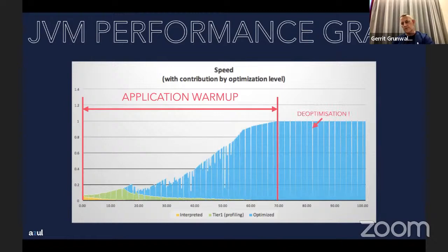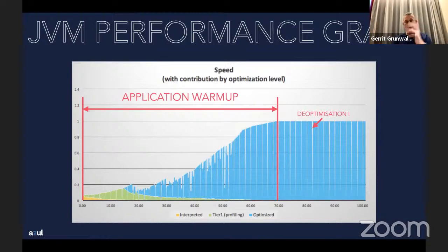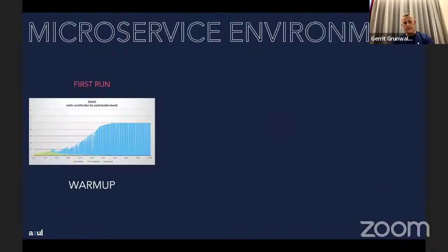There are also these gaps in the graph — so-called de-optimizations. This happens when the JVM compiler does speculative optimization: it finds a branch, decides it'll be called often, and optimizes just that branch. As long as that's true it's fine, but if the other branch gets called, it has to revert everything back to the interpreter and recompile. We try to avoid de-optimization because it causes performance hits.